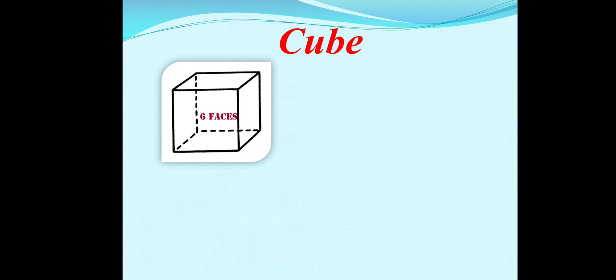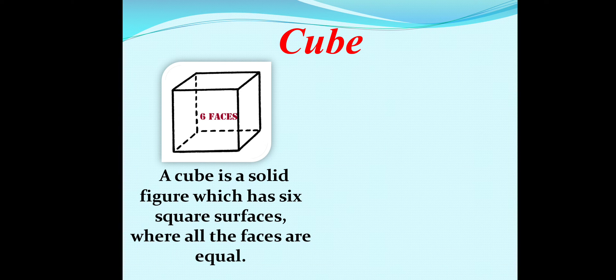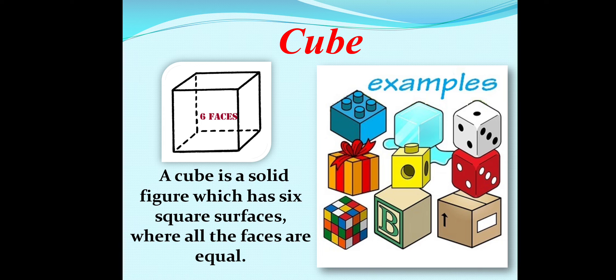Now, let's learn about cube. This shape is called a cube. A cube is a solid figure which has six square surfaces where all the faces are equal. See this picture. You will get more knowledge about cube. Cube, big building blocks, ice cube, gift box, dice, rubik's cube are some examples of cube.